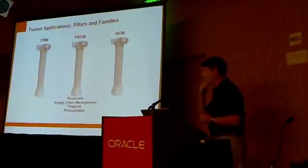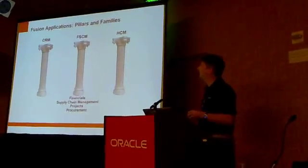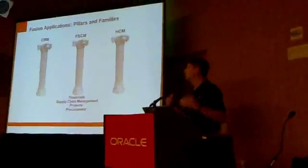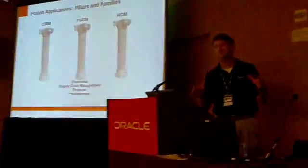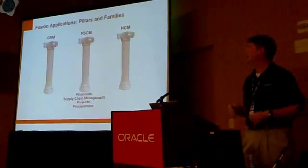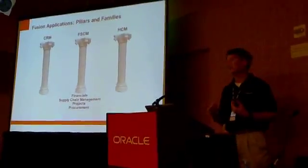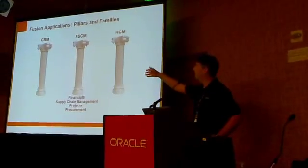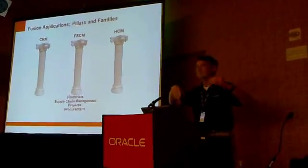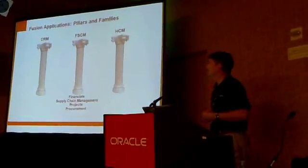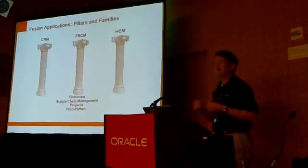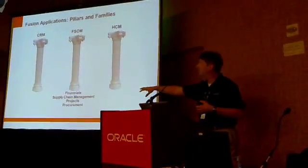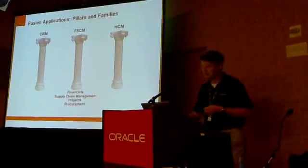Fusion Applications is broken up from a development perspective into pillars and families of applications. There are three large groups that could be installed completely separately and upgraded independently: HCM (HR system), Financial and Supply Chain Management, and CRM. The architecture needs to handle any combination of these being purchased at potentially different version levels, so the three pillars interact with each other less tightly than applications within a single pillar — like Financial Supply Chain Management, Projects, and Procurement.